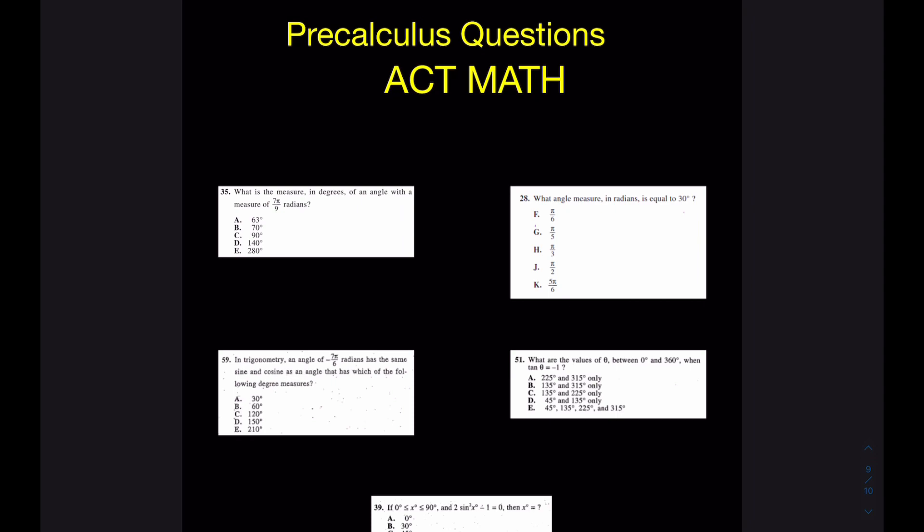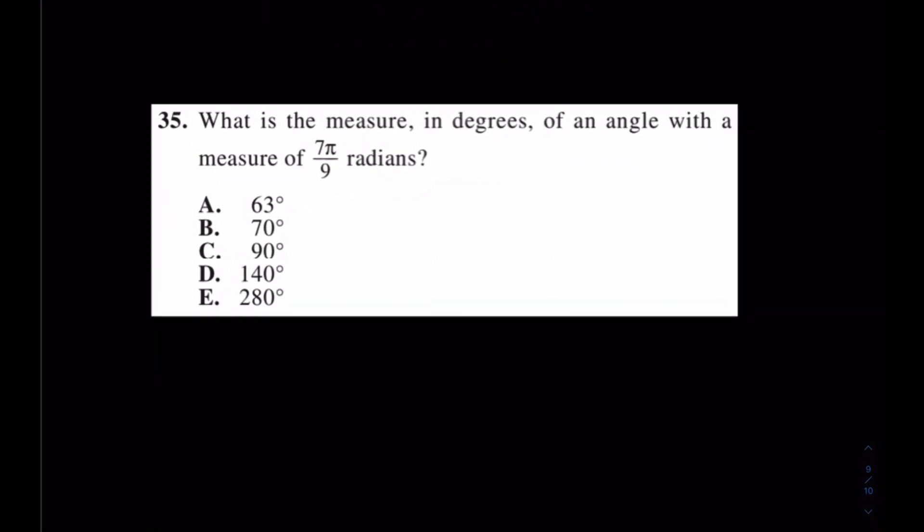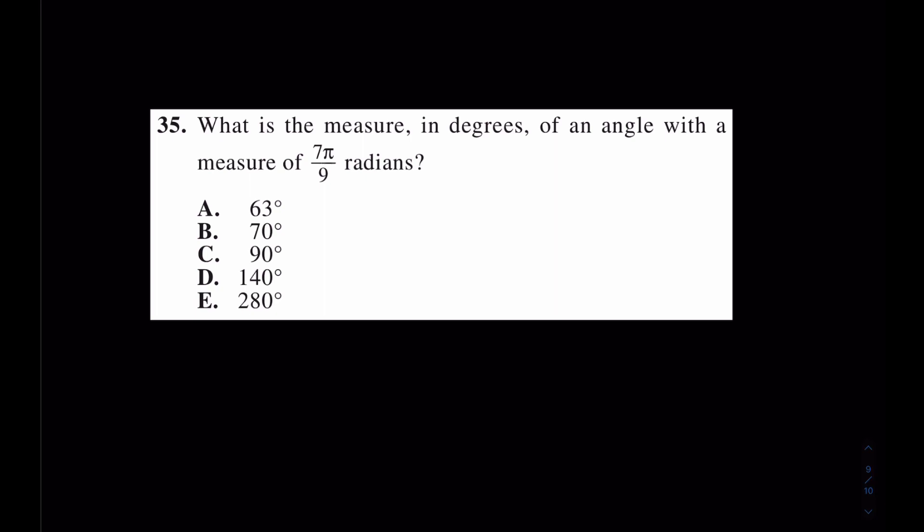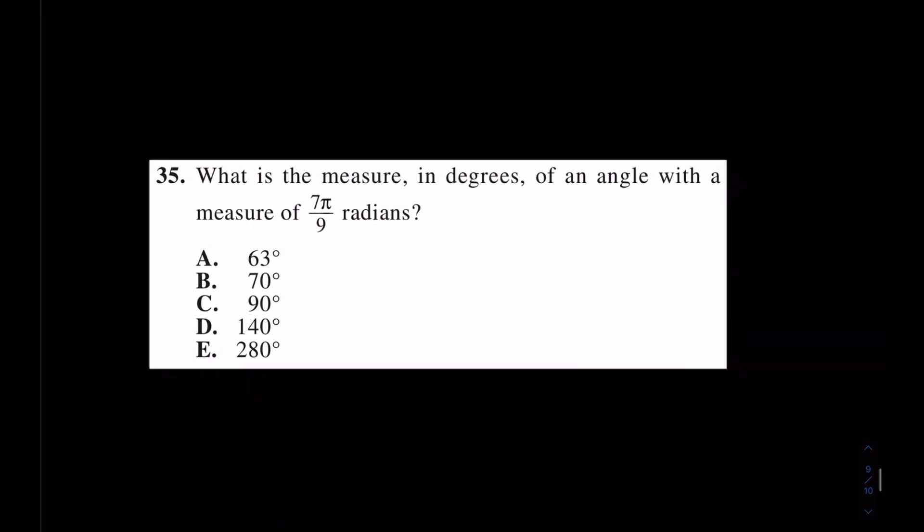Let's take a look at number 35. For my friends that haven't taken pre-calculus yet, or in their pre-calculus class they haven't approached these skills yet, I'm going to give a brief introduction to each skill. The question is asking what is the measure in degrees of an angle with a measure of 7π/9 radians? Well wait a second, what is 1π radian?